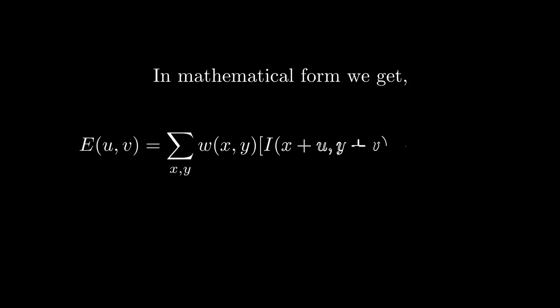Now let's see how to represent this idea in math. I gives the intensity of the pixel located at (x,y). I(x+u, y+v) gives the intensity of pixel which is located at u and v pixels away from x and y. We are looking for areas where this difference is maximum, which happens near edges and corners.